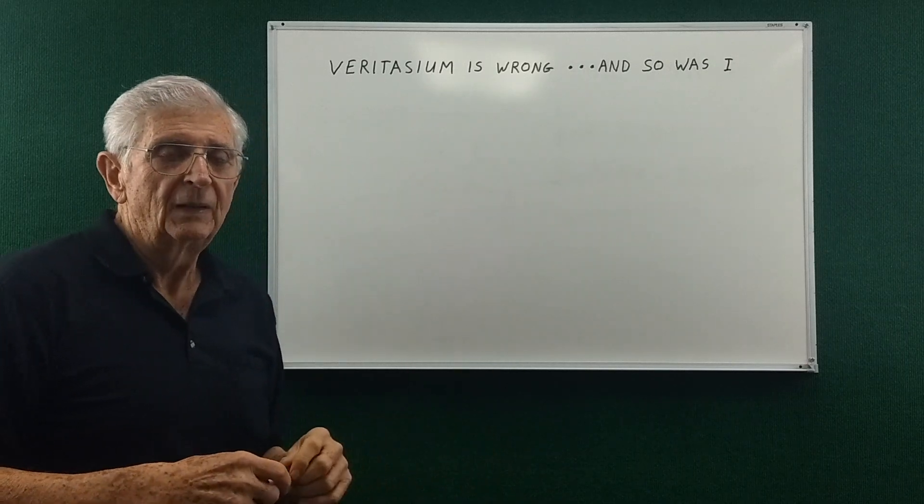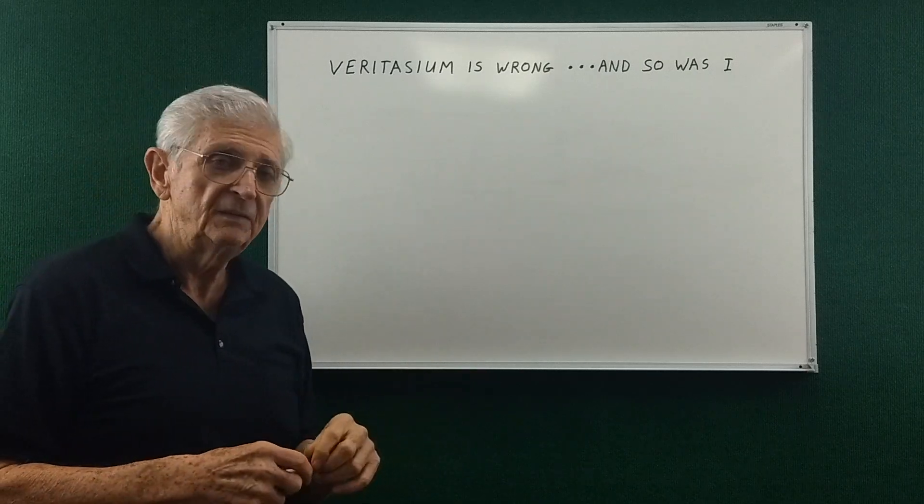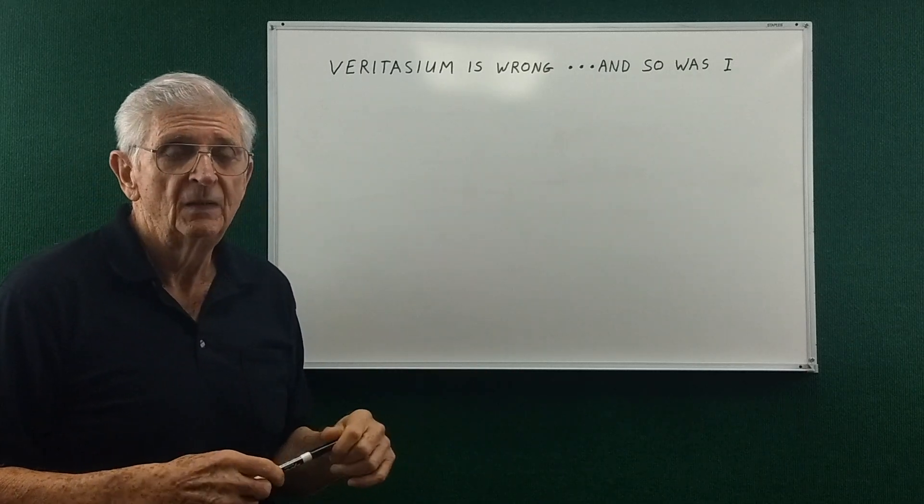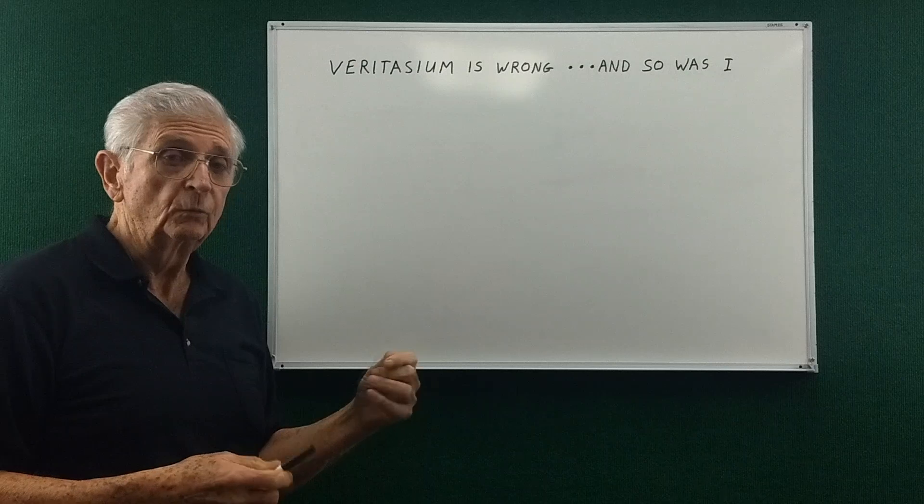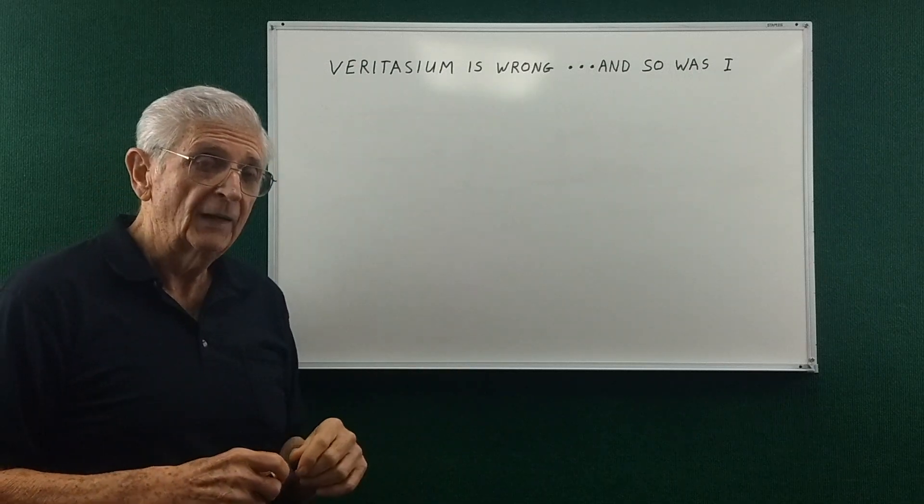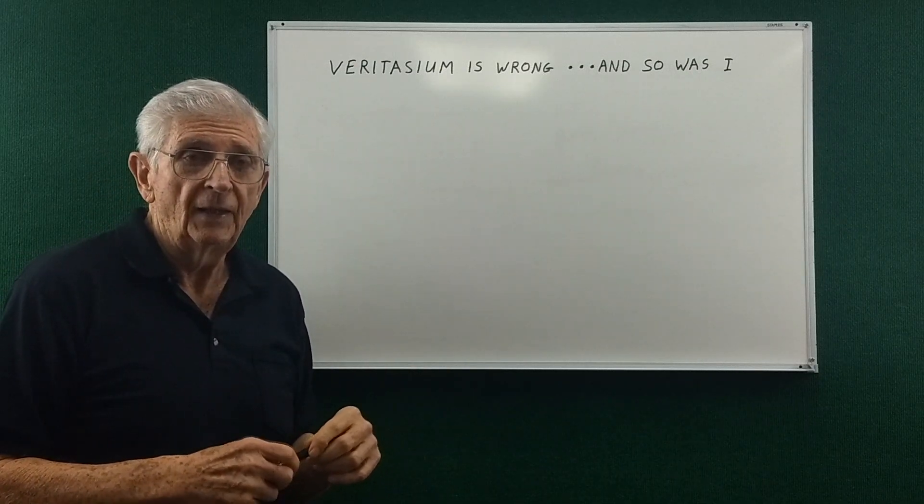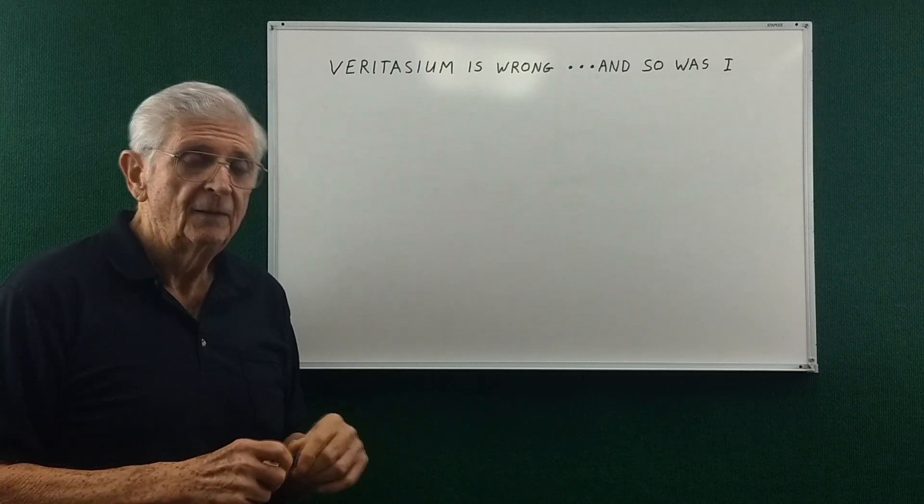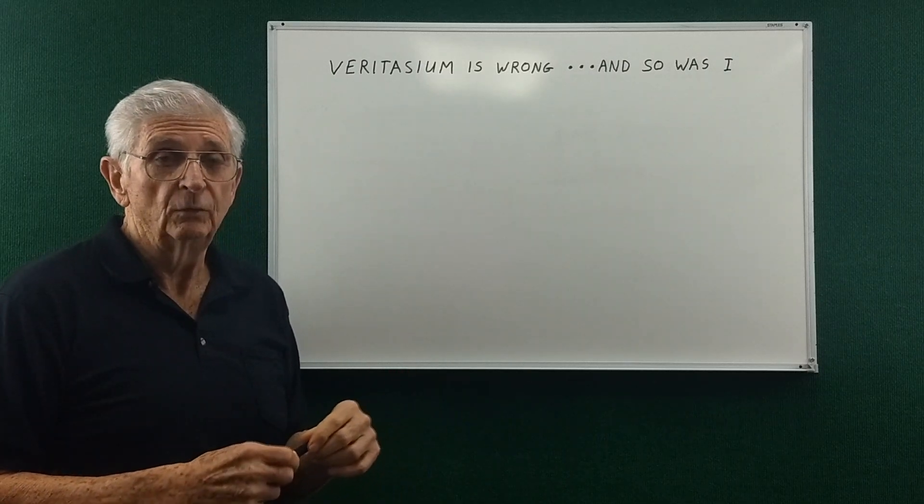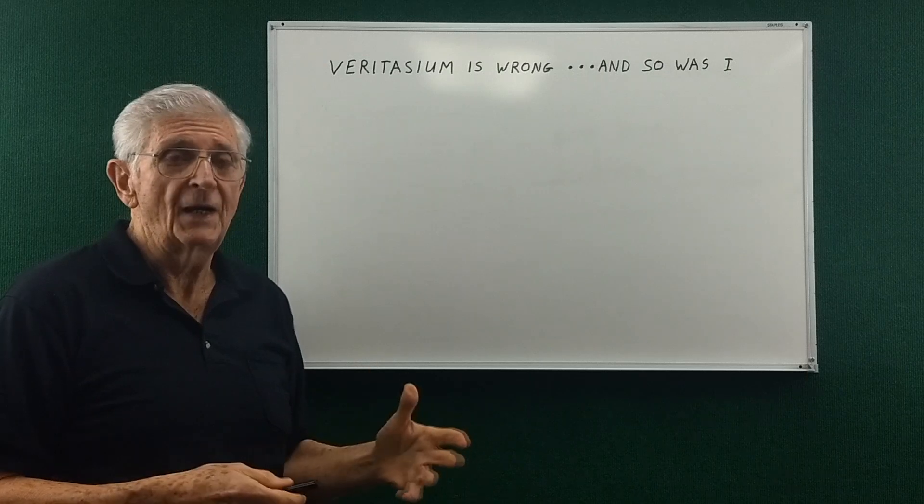So I think it's fairly obvious that in a DC circuit, although the Poynting vector will tell you in which direction the energy is flowing, the energy is not flowing through the fields, it's flowing through the wires.